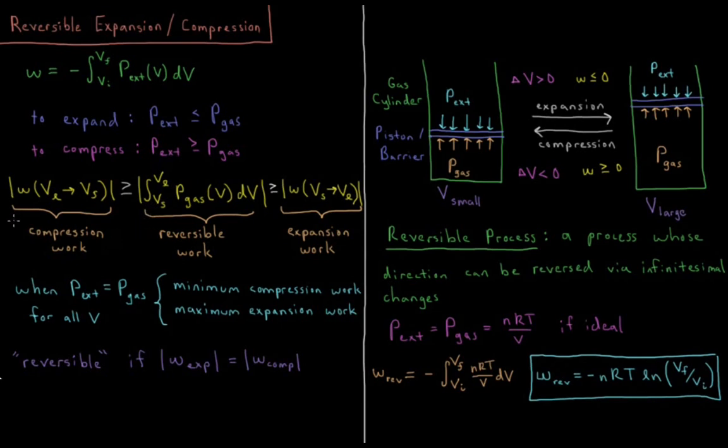So what this results in is the following inequality. So because of these relationships of what our external pressure is, and our external pressure being what's included here for our work integral, the work that we do during compression, the magnitude of it, because it's going to switch signs between expansion and compression, but the magnitude of the work that we do for compression is going to be greater than or equal to the amount of work that we do for expansion.